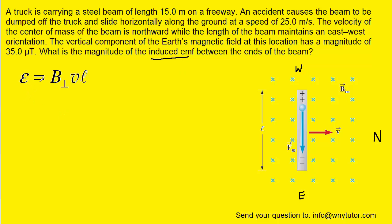So the EMF is equal to the perpendicular component of the magnetic field multiplied by the speed of the object and then times the length of the object. We were given the speed in the question as well as the length, so those are pretty straightforward. The magnetic field is in micro Tesla, so we're going to have to convert that to Tesla by multiplying it by 10 to the minus 6.